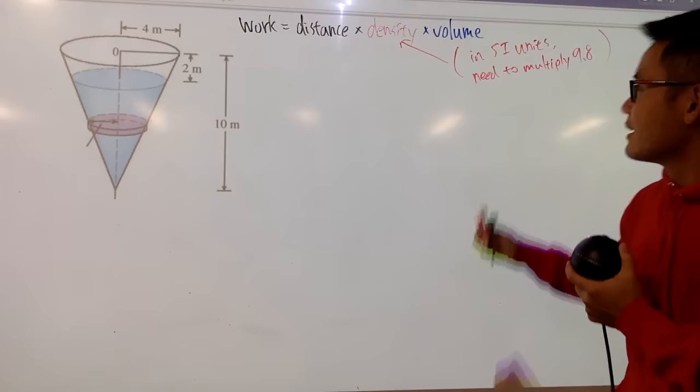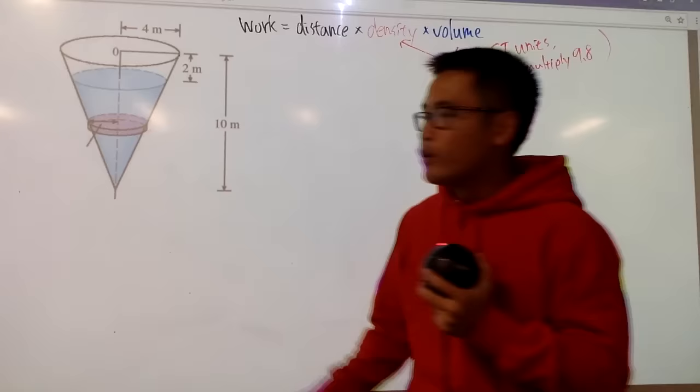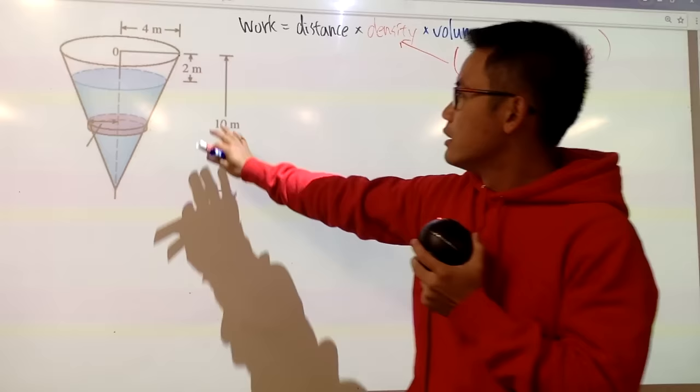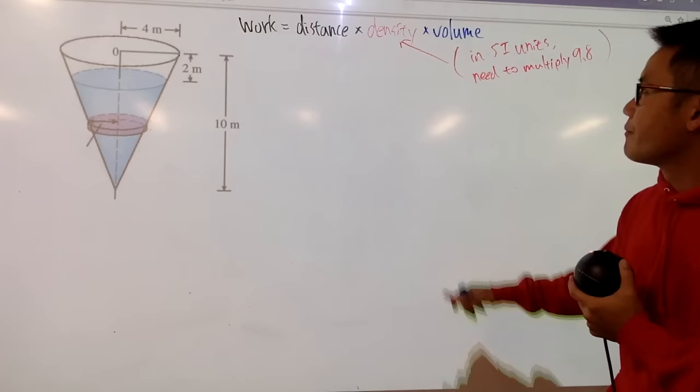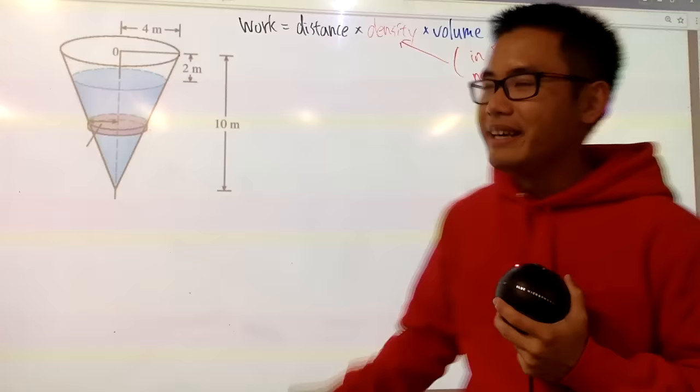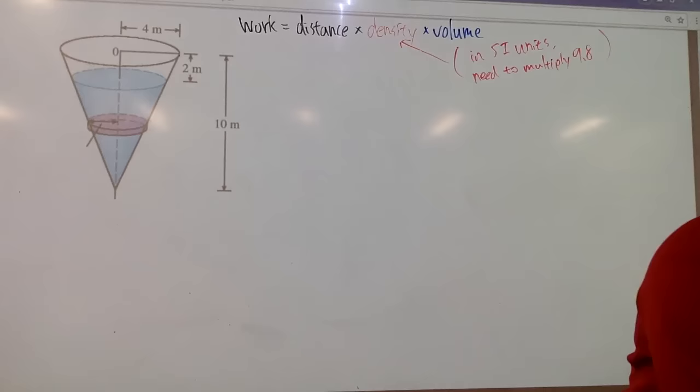But once again, let me just put down the density right here. Remember, if we are using, let's say, 2 feet, 10 feet, 4 feet, if we are in the US unit, we don't have to multiply by the 9.8, because that would be considered the weight density already. But remember, we are pumping in water, so you also have to know the magic number, which is 1000 in the SI unit for the mass density of the water.